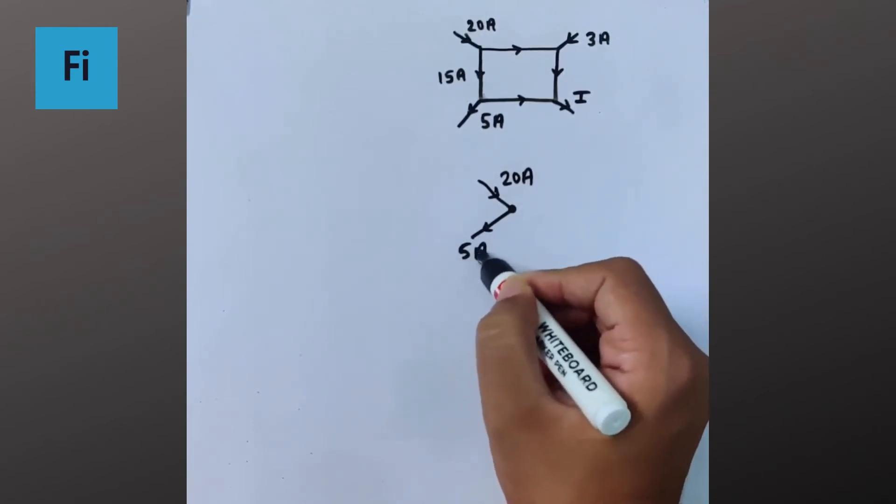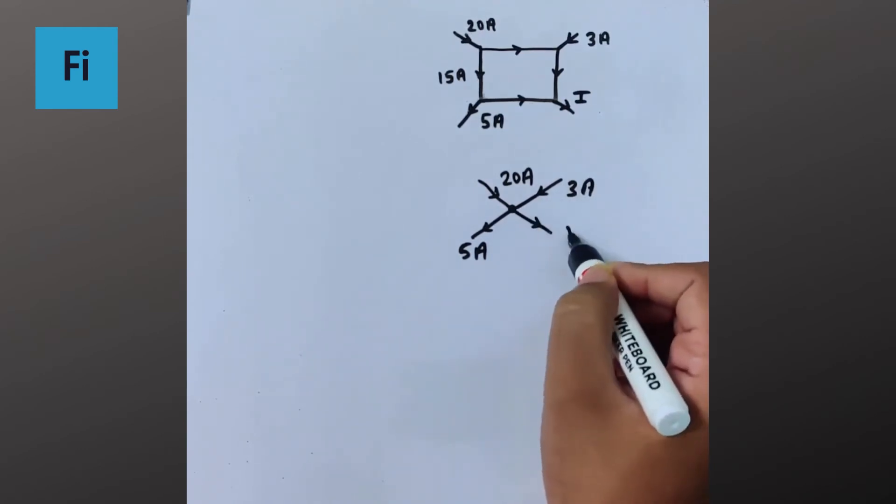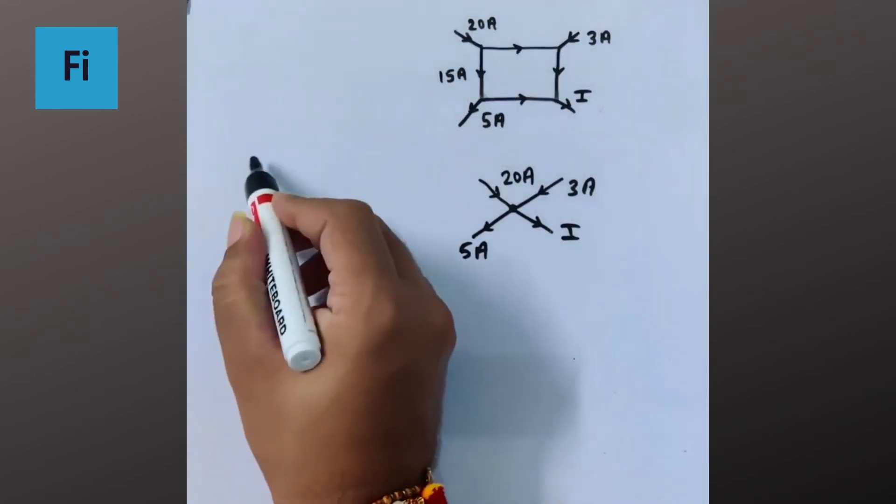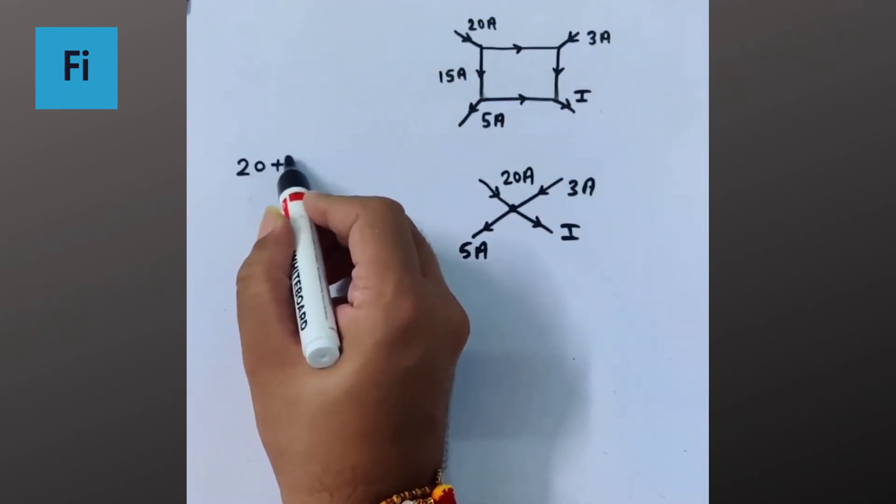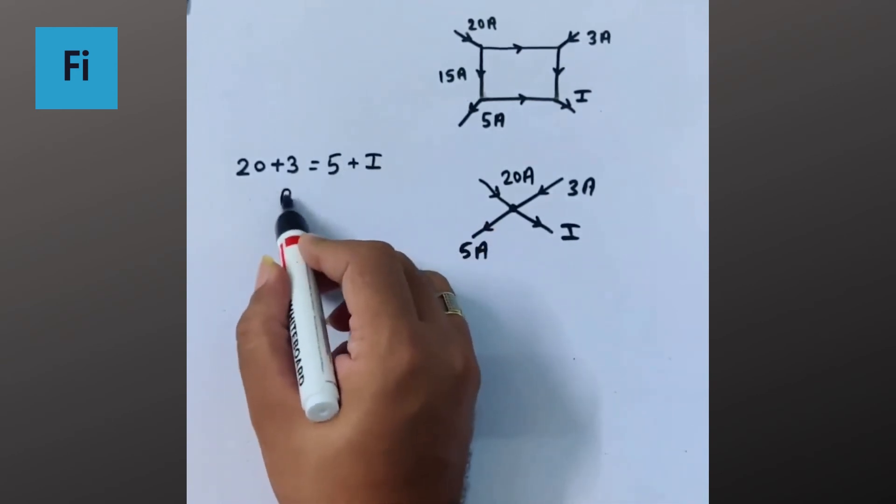Okay, so in this situation I can say 20 plus 3 is equal to 5 plus i by KCL.